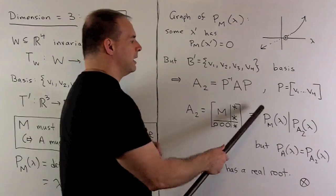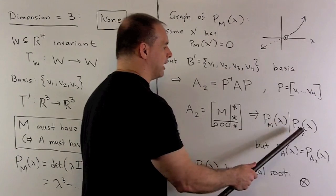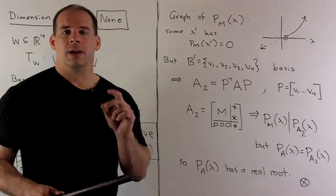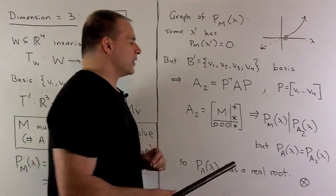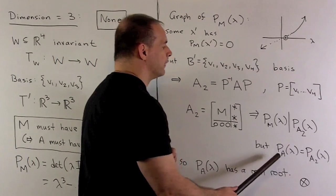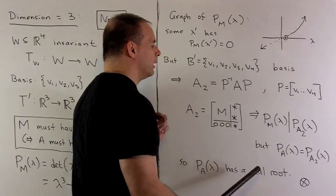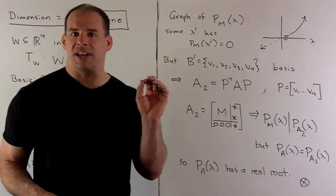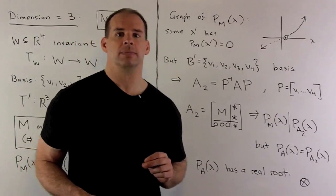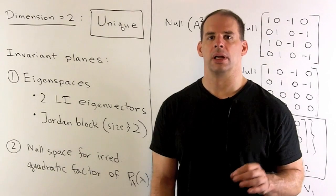Now, if we compute characteristic polynomial of A₂, we note that P_M is going to have to divide P_A₂. But, since A₂ and A are similar, they're equal. So, that means P_M divides P_A. And since P_M has a real root, P_A must also have a real root. But, we know that doesn't happen, so contradiction.